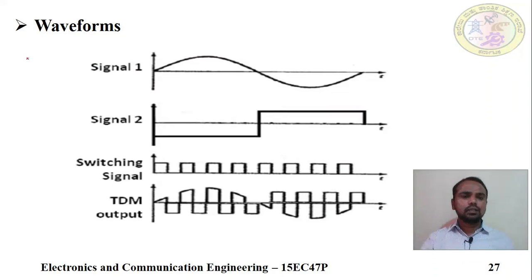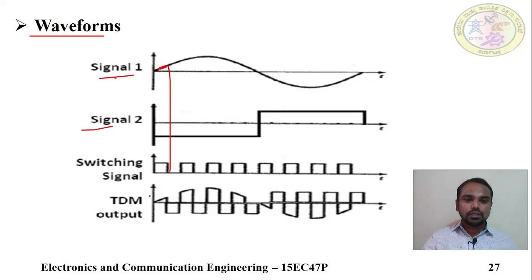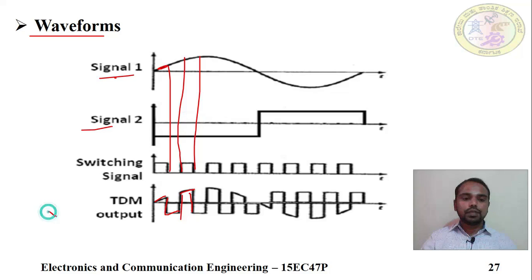This is a sample signal showing how the waveform looks. Signal 1 is a sine wave, signal 2 is a square wave, and there is a switching signal. At time T1, it is sending part of the first signal — the sine part — then the square part. At time T2, in that time slot, both information are merging — the sine part and the square part. Likewise, signal 1 occupies the first time slot, the second time slot carries the second component, and with the help of the switching signal the output of TDM looks like this combined waveform.